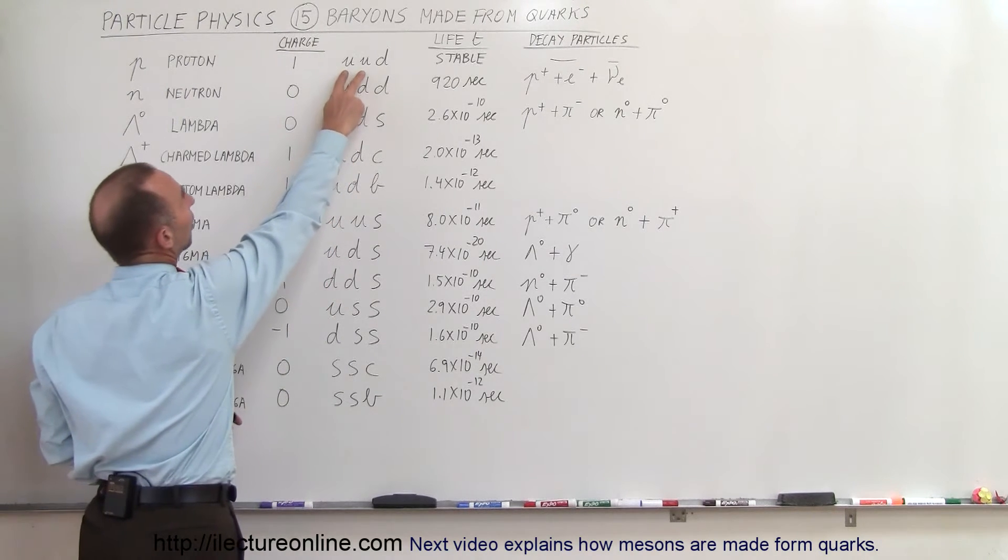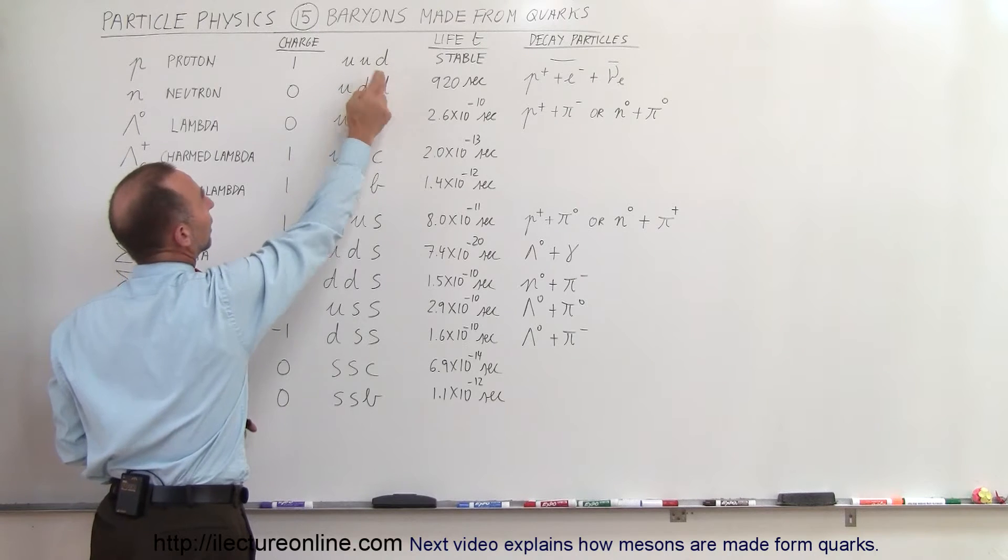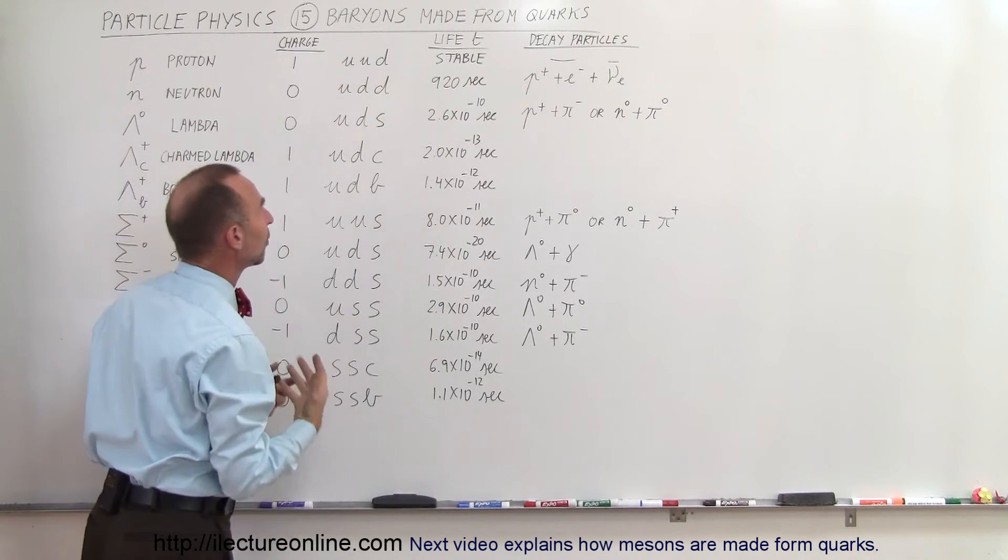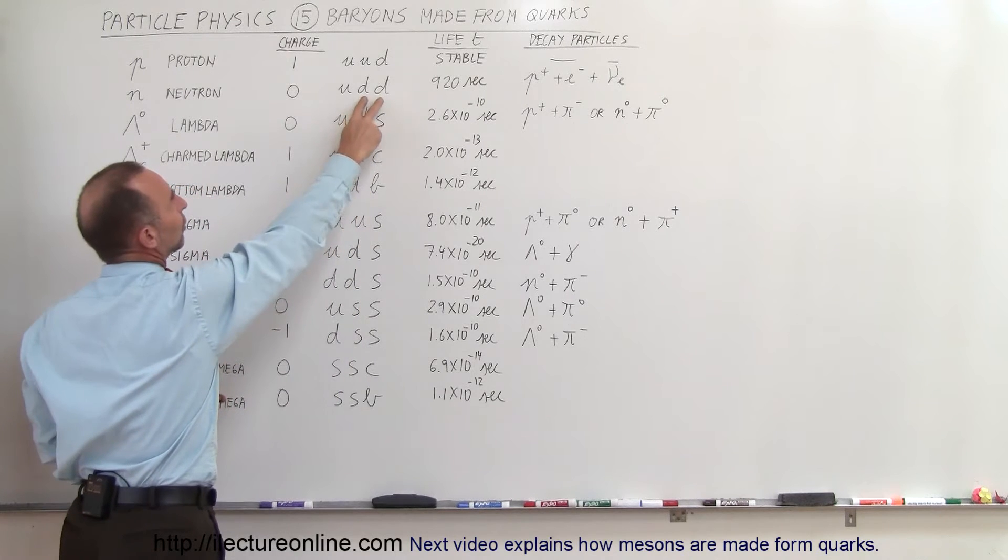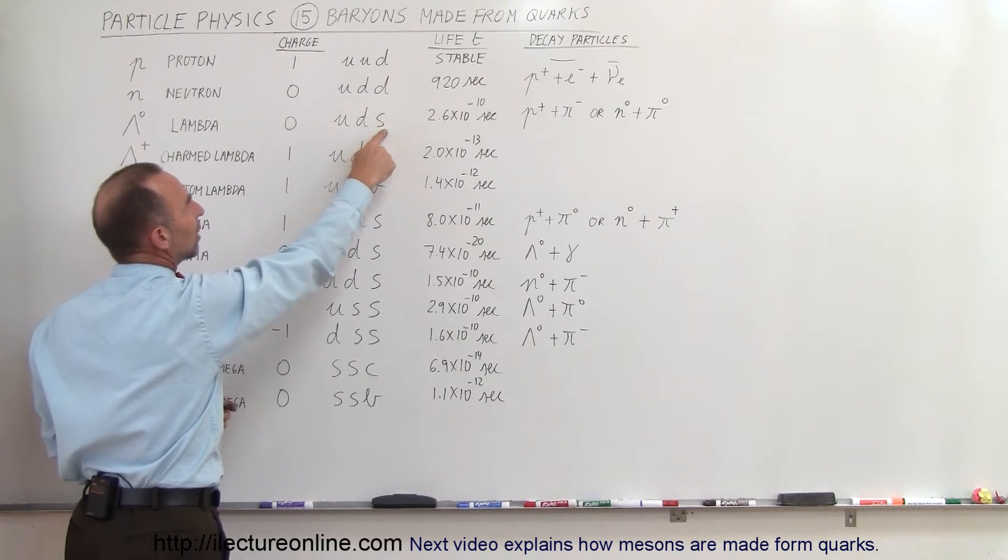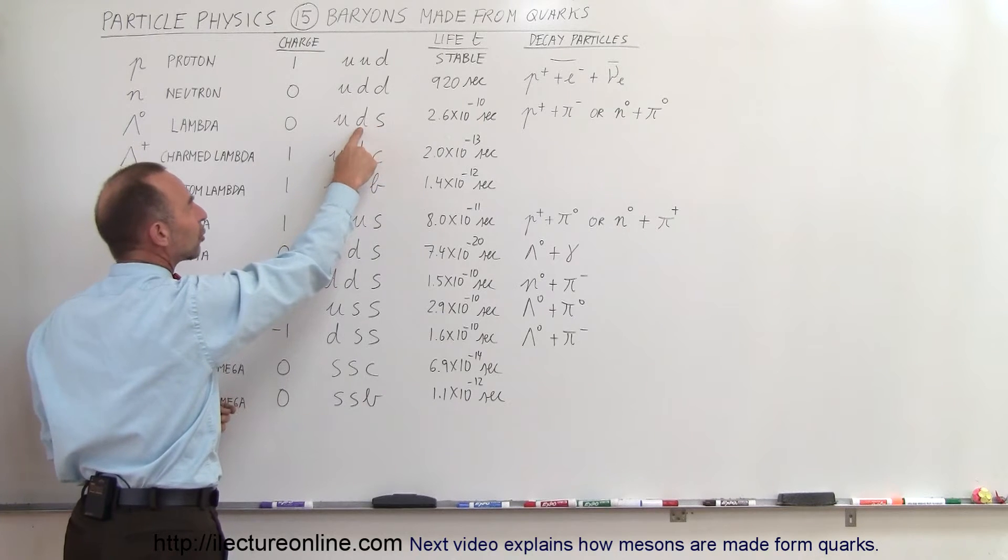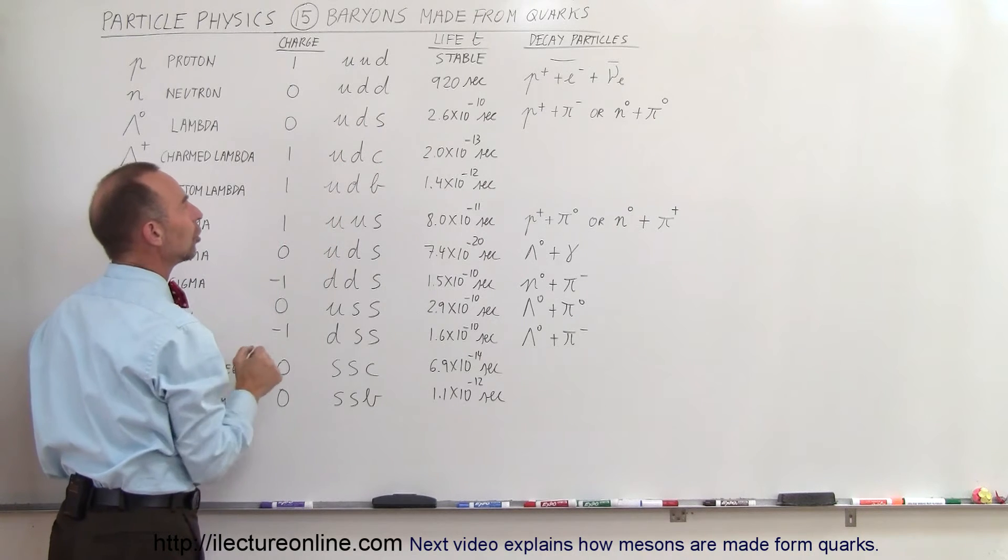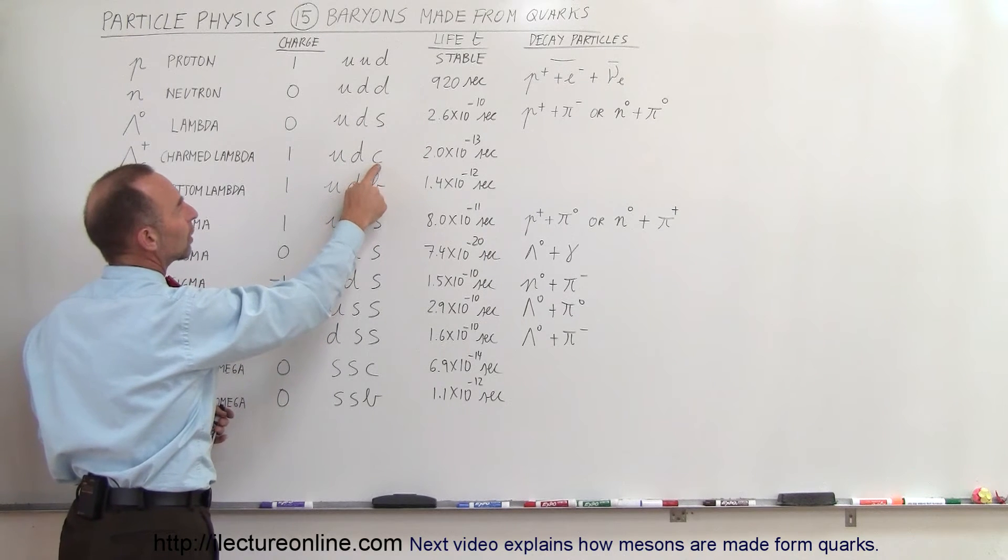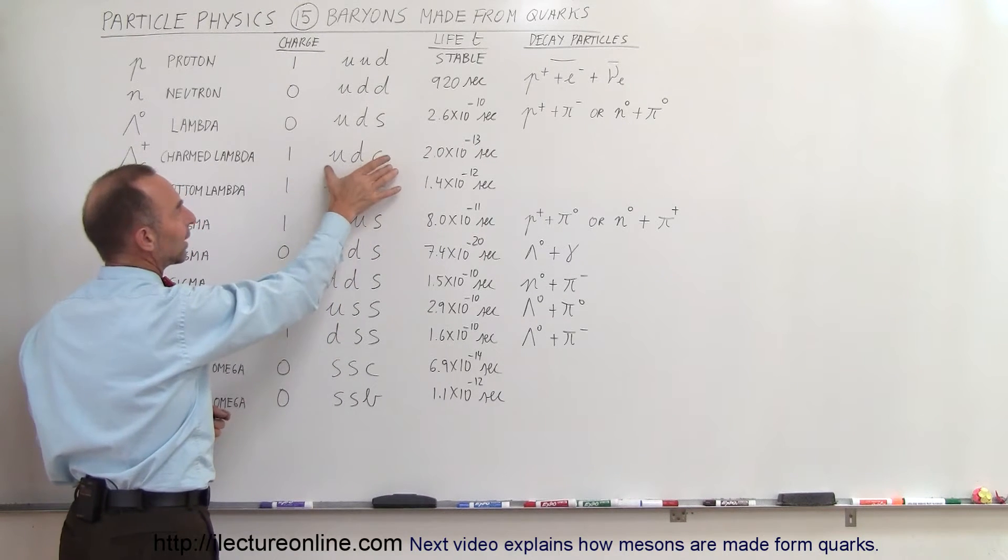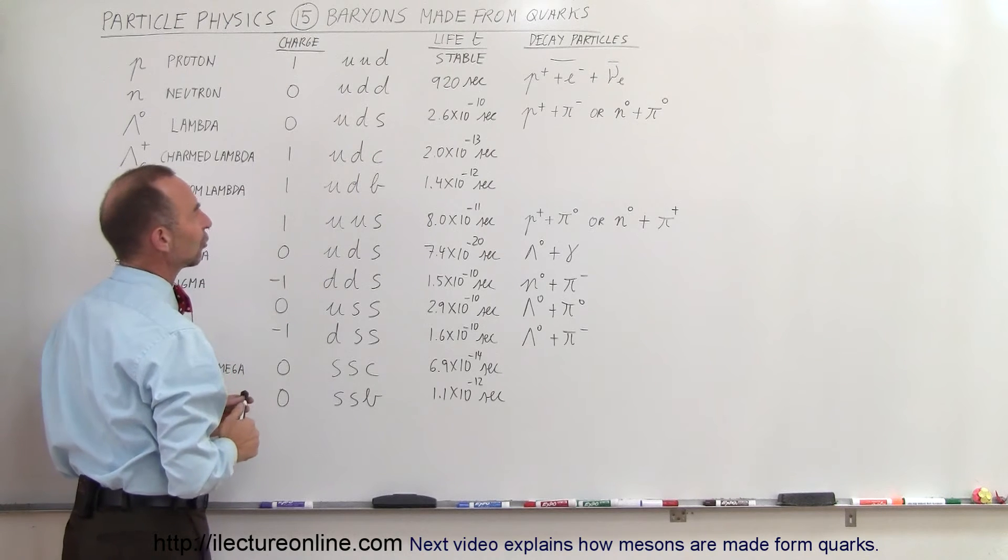Notice that the up quarks have a positive two-thirds charge and a down quark has a negative one-third, so positive two-thirds twice minus one-third is a positive charge. Two negative one-thirds and a positive charge give you zero charge. You can see that the strange quark has the same charge as a down quark, minus one-third, so two minus one-thirds plus the up two-thirds is neutral. Notice that a charm quark has the same charge as an up quark, so both of them have a positive two-thirds, so down quark is minus one-third, so together they give us a positive one charge.